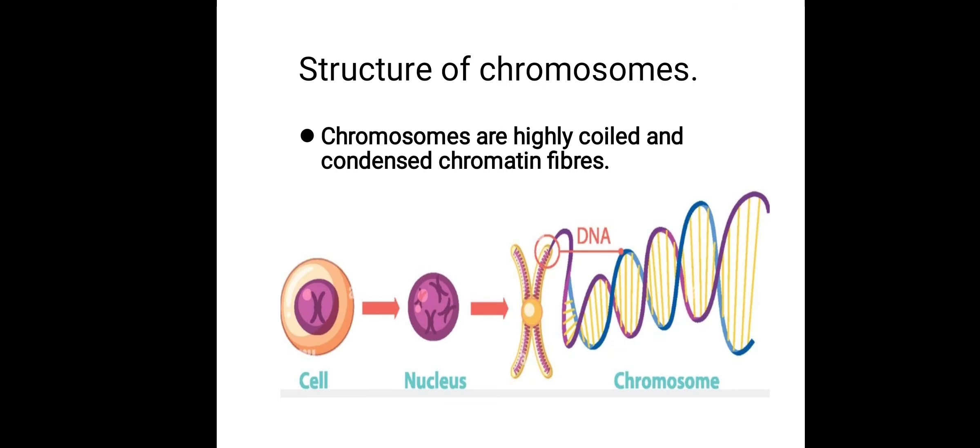What is the definition of chromosomes? These are the highly coiled and condensed chromatin fibers. If you are looking at this diagram, the nucleus is present, and inside the nucleus fine thread-like structures are present. When these fine thread-like structures are condensed and coiled, the structure we call chromosomes is formed — it is coiled and condensed chromatin fiber.